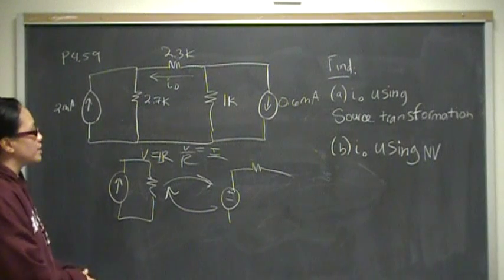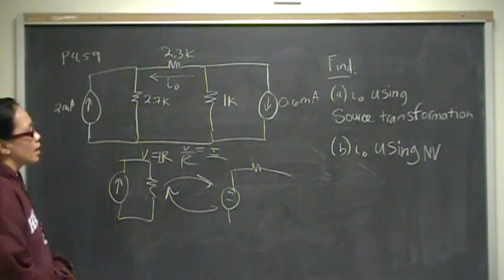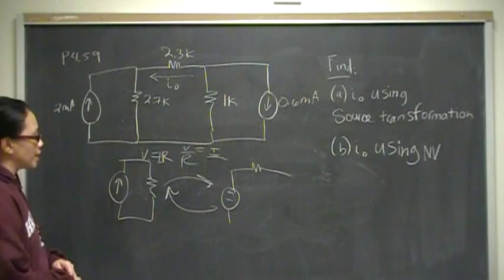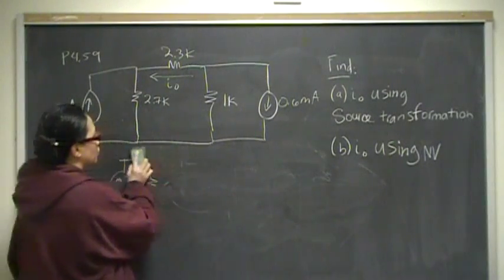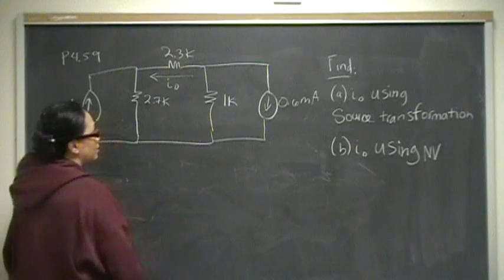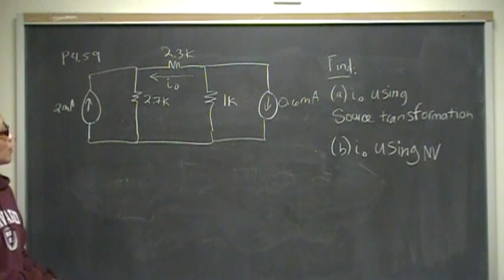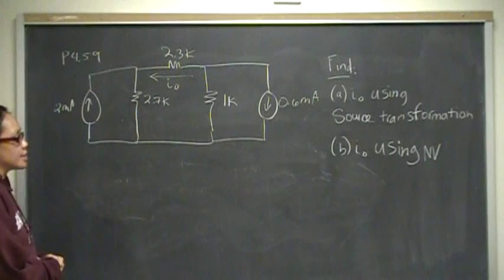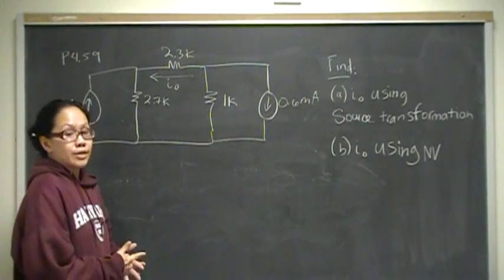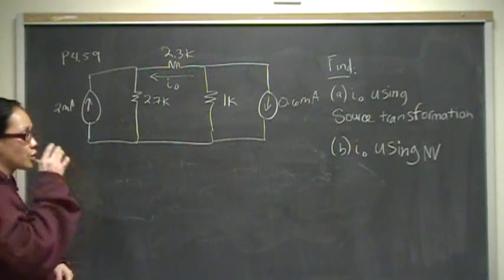We're going to use that in order to transform this into a single current source. Once I did all my source transformations, there's two to do. Once you do that, you can combine everything into one current and one resistor, and that will give you the current. Using node voltage, pretty straightforward - there's two nodes, you use KCL at the two nodes and solve it using matrices or simultaneous equation method. So go ahead and pause the video, try those things, and then restart it when you're ready to check your answer or if you get stuck.